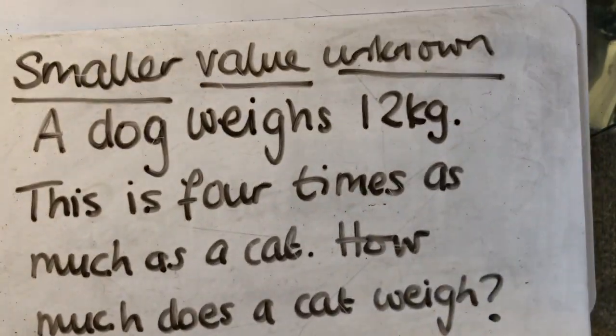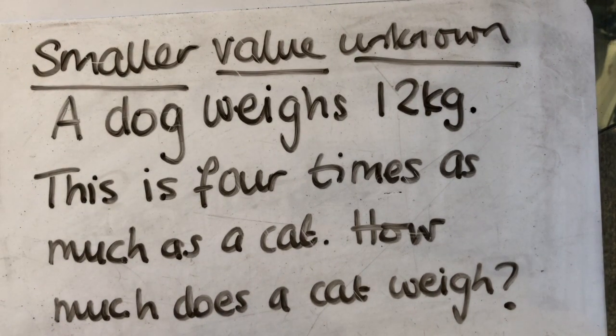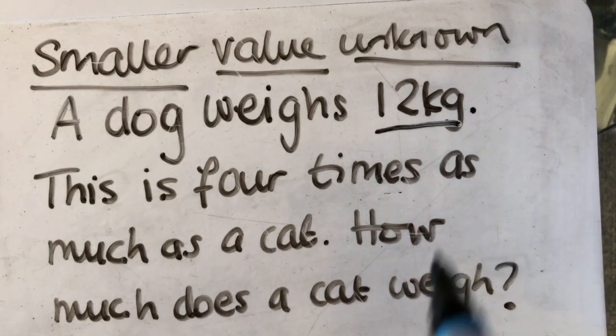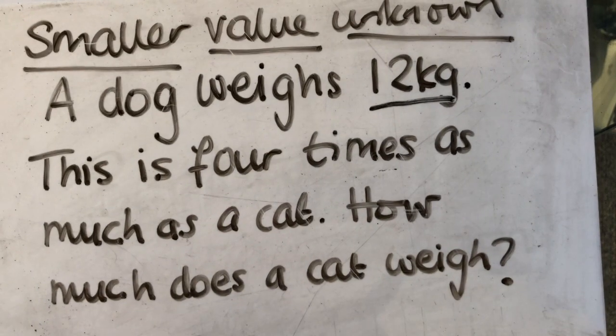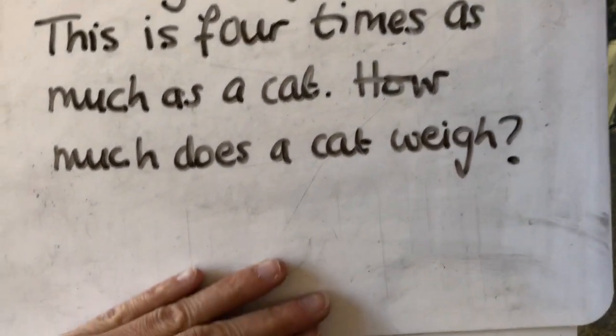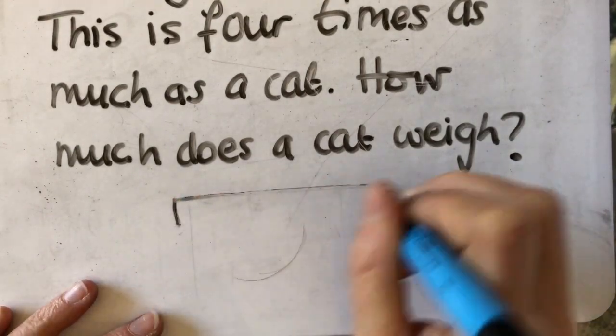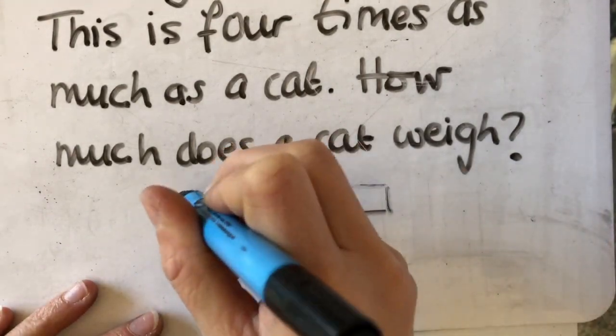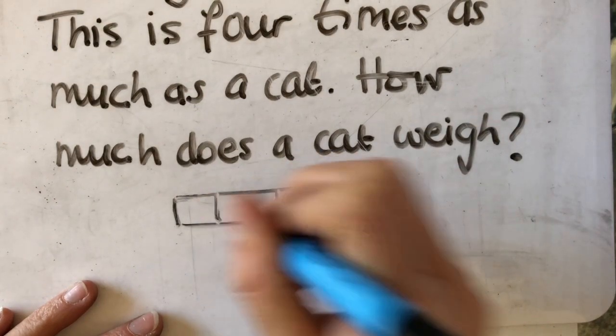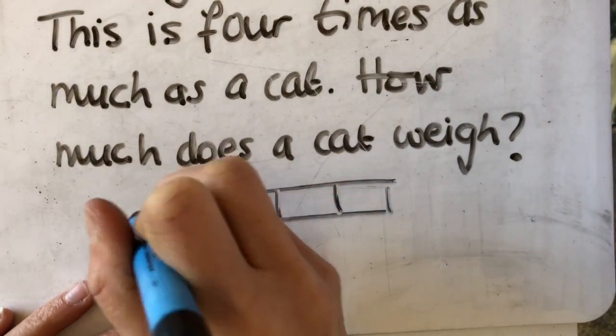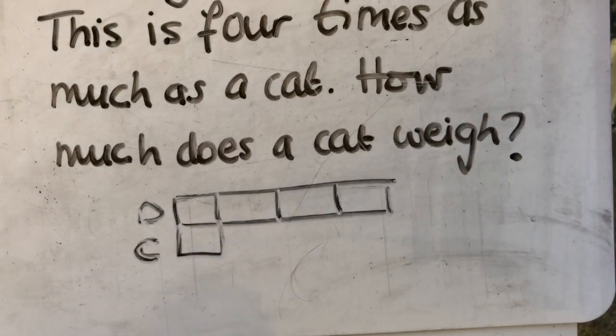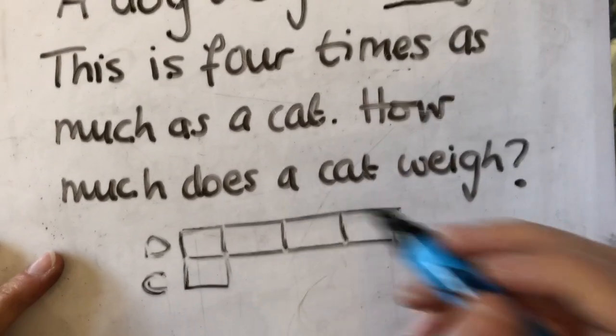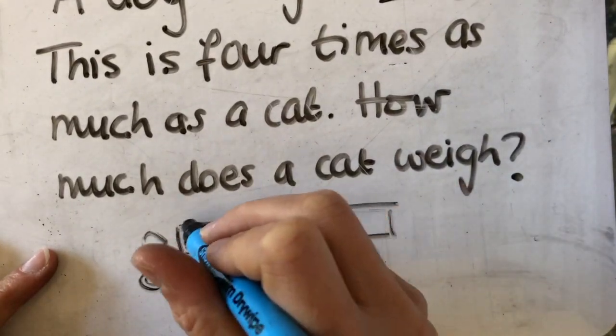So here is one where our smaller value is unknown. A dog weighs 12 kilograms. This is 4 times as much as a cat. How much does the cat weigh? I know that the dog weighs 4 times as much as the cat. So here's my dog and here's my cat. I can see on here the dog weighs 12, so I know the total of that is 12.